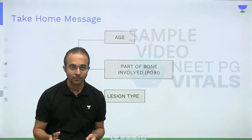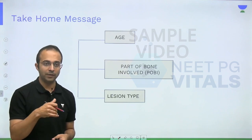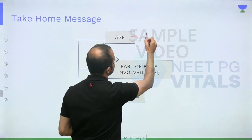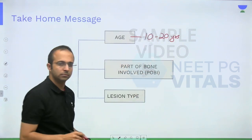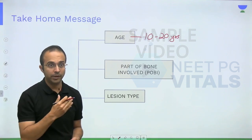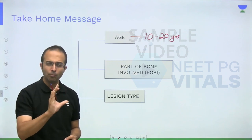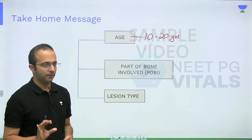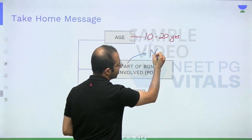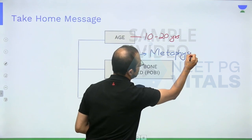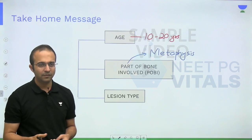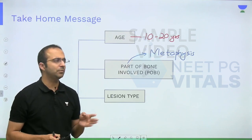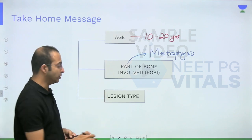As I take you through tumors of the bone, here are some important take-home messages. I will ask you in every tumor: what is the age? The answer will almost always be young age — 10 to 20 years is a fairly safe age group to bank upon, as tumors are related to growth and puberty at this age. I will also ask which part of the bone is involved. The part that harnesses the growth plate is the metaphysis, so maximum tumors will be centered around the metaphysis.